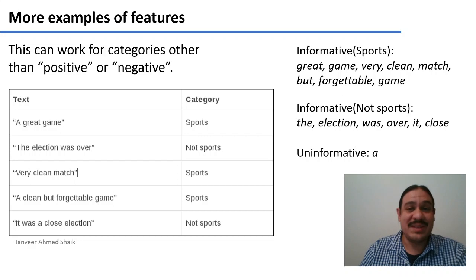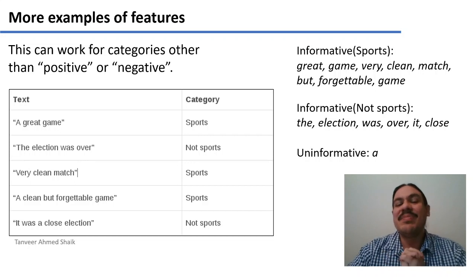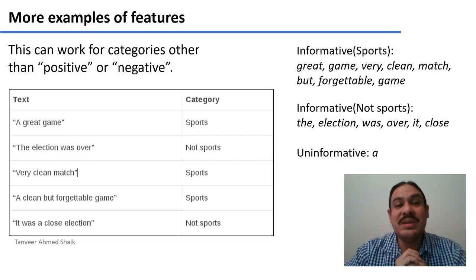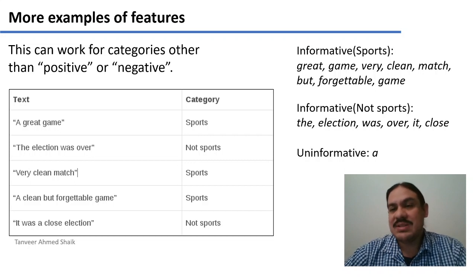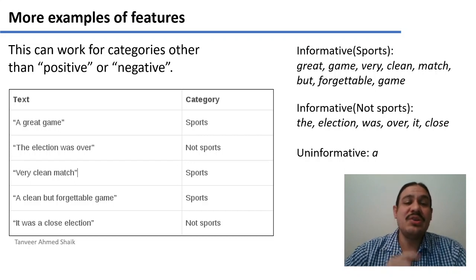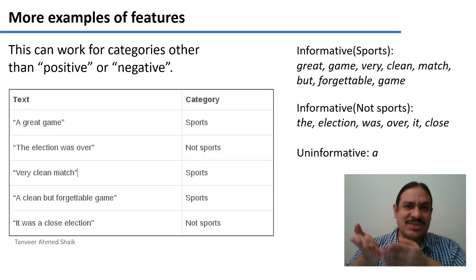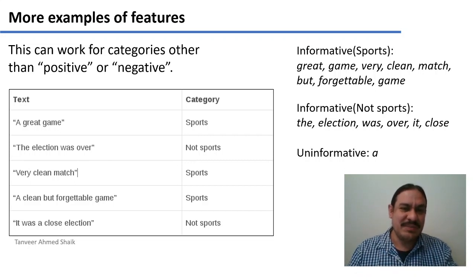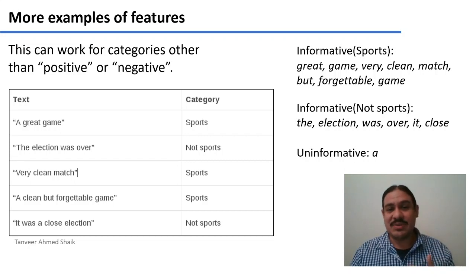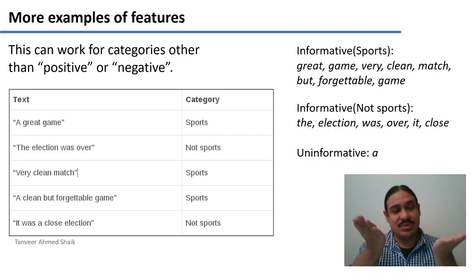So it could be something like this: the words 'great,' 'game,' 'clean,' 'match,' and 'forgettable' are very informative of the category sports because they only appear in documents labeled sports. Words like 'the,' 'election,' 'was,' 'over,' 'it,' and 'close' are very informative of not-sports because they only appear in not-sports documents. Notice again that we shouldn't expect the word 'the' to be informative about not-sports in real life — it's just an artifact of how the training set is structured. The word 'a' is uninformative because it appears in both sports and not-sports documents.